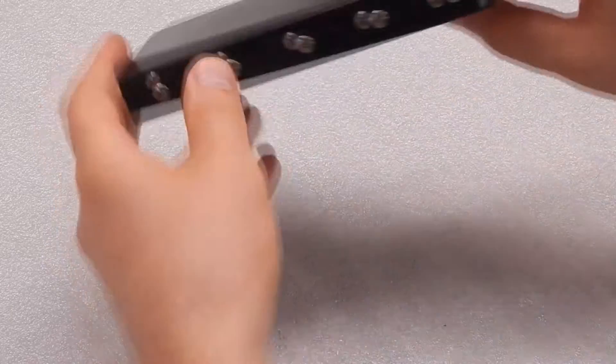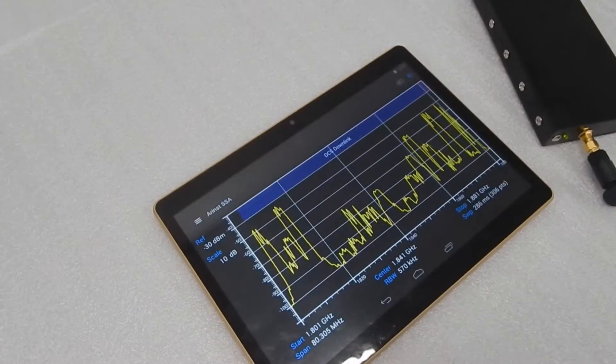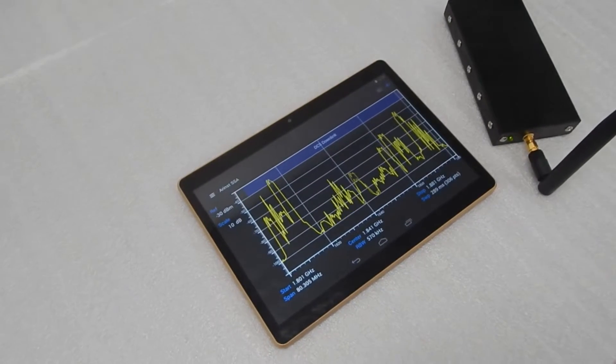On the back cover, there is a mini-USB connection and the power switch. The information is displayed by an Android tablet connected to the spectrum analyzer with Bluetooth.